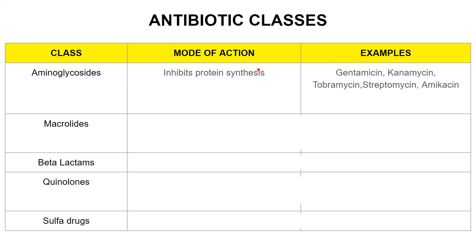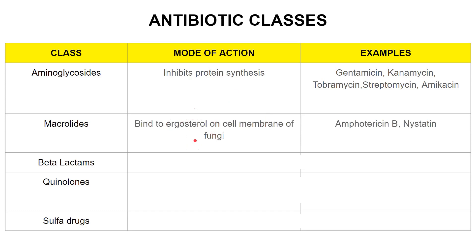Next we have macrolides. Macrolides are antifungals — they bind to the ergosterol present in the fungal cell membrane. Examples are amphotericin B and nystatin.